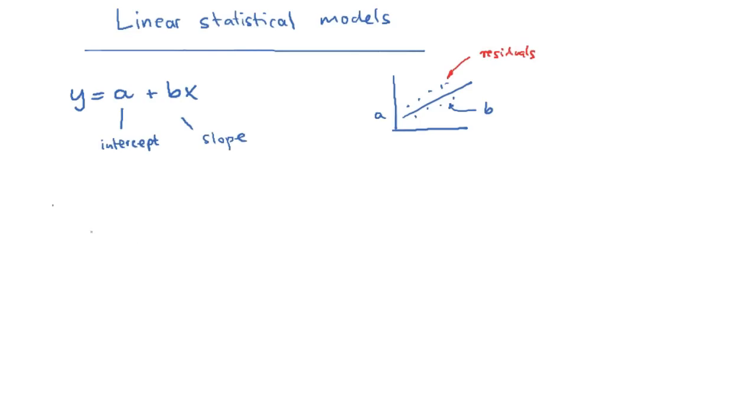Now the linear statistical model is basically just a change in notation of this straight line relationship here. So we write the following. The expected value of y is beta0 plus beta1x. So nothing has changed actually. The expected value of y, given a very large number of samples, is beta0 plus beta1x.